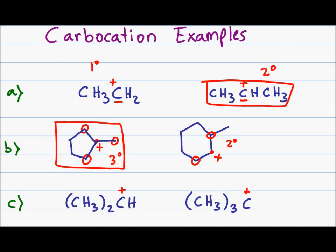The last problem looks tricky, but pay attention to the parentheses and the number following. In the first structure, I have two methyl groups on my carbocation, meaning a secondary carbocation. In the final structure, I have three R groups on the carbocation, giving a tertiary carbocation. Once again, tertiary is more stable than secondary, so the second one is the more stable carbocation.